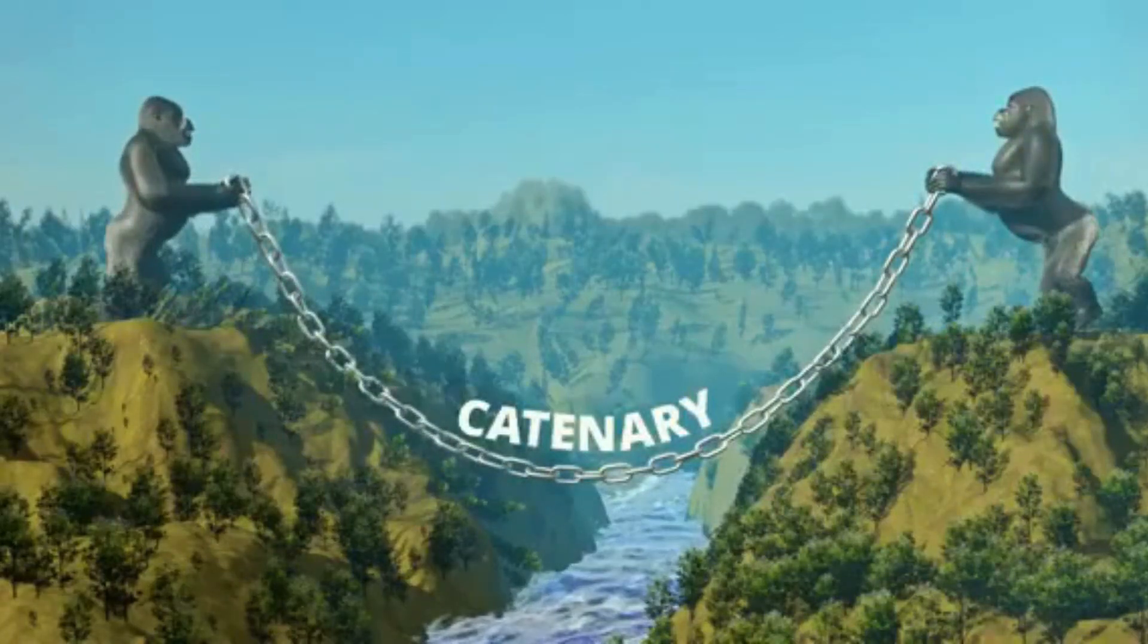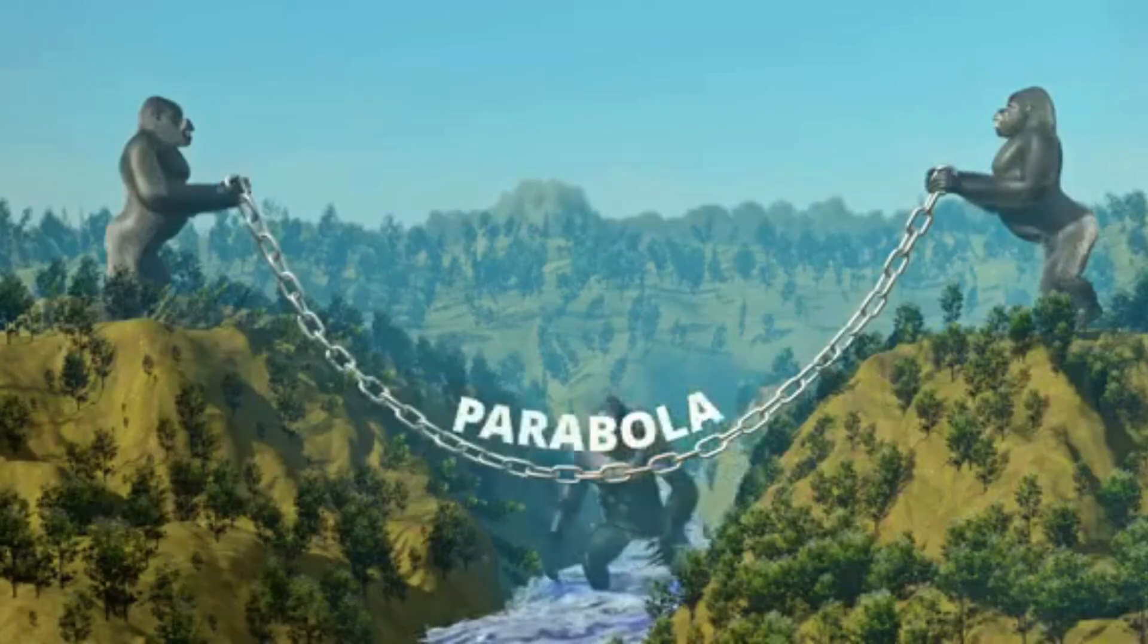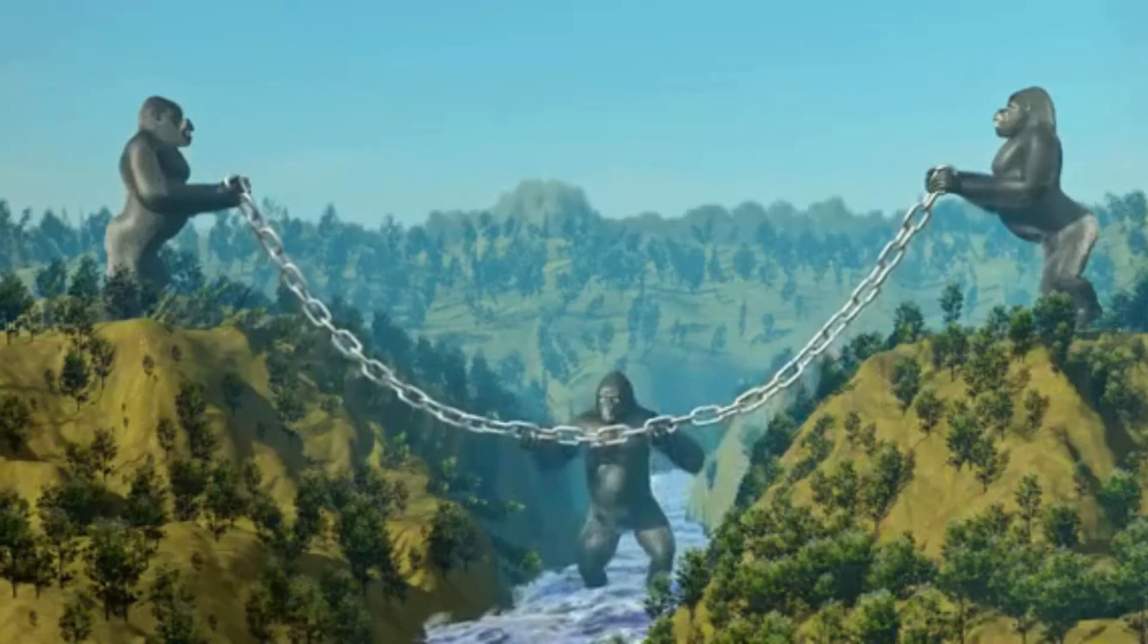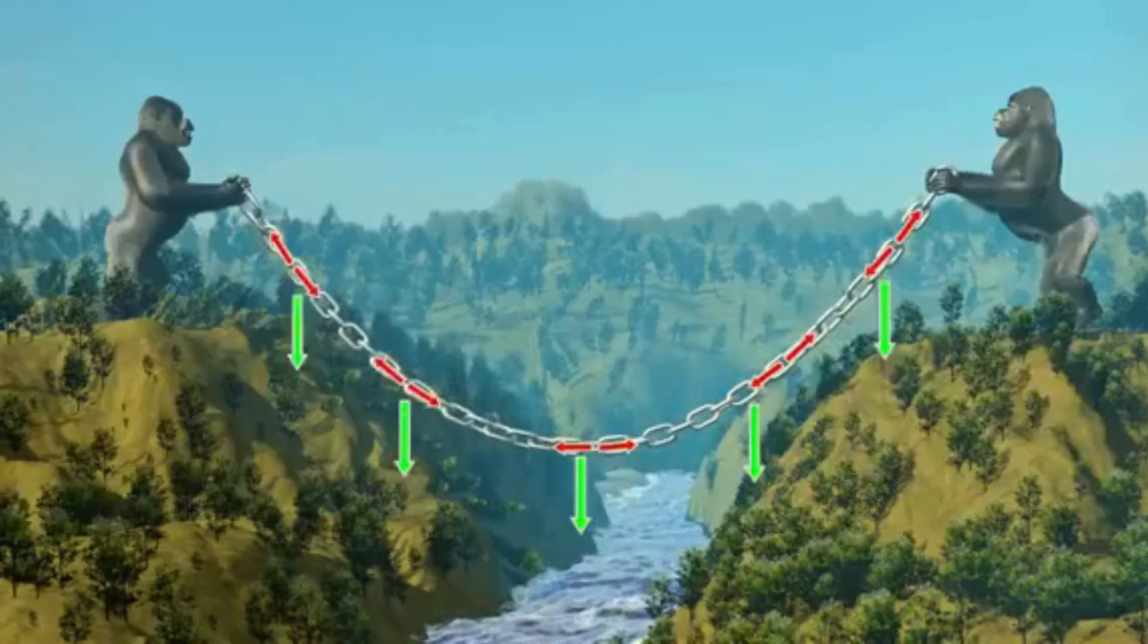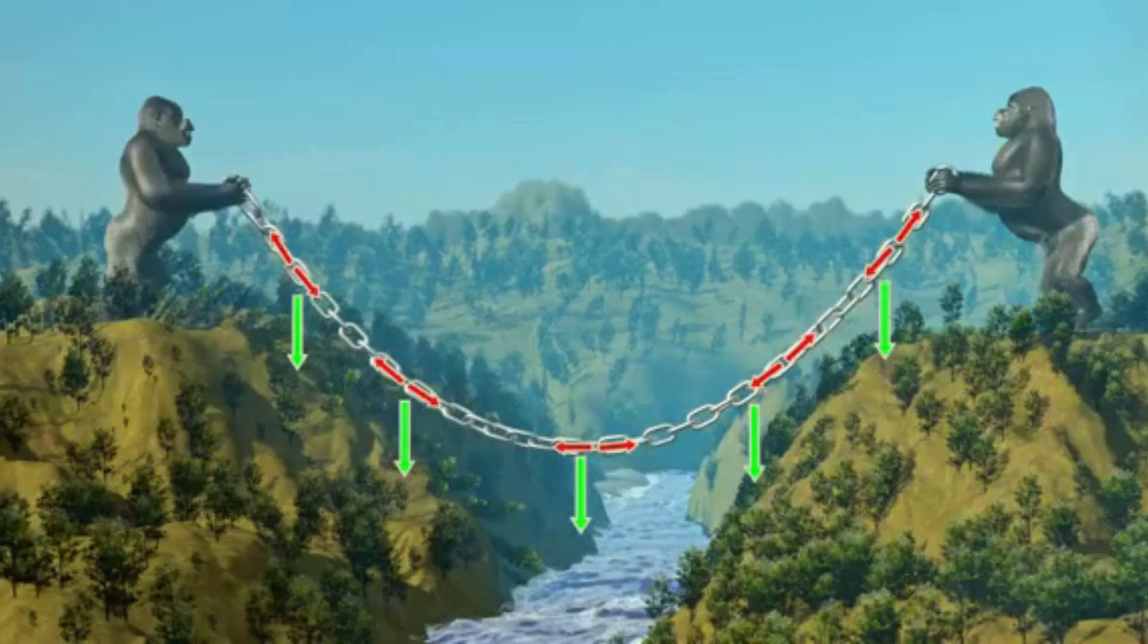The shape this chain forms is a catenary. However, for simplification, we can approximate this shape as a parabola. Even if you try to hold it in some other shape, it won't stay there. A chain can support only a normal tension force.